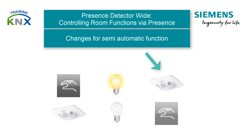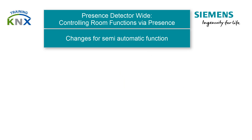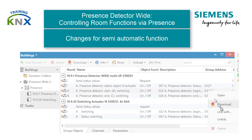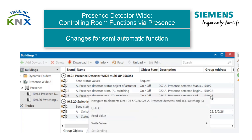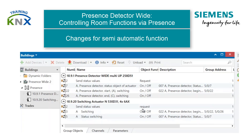The changes for this are very simple. Since there are two objects for switching on and off, only one link with the group address has to be released respectively and you are done.